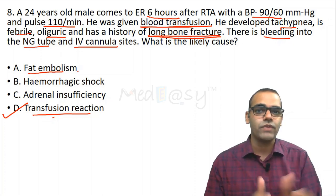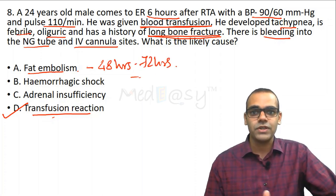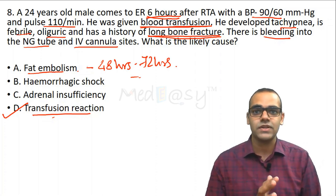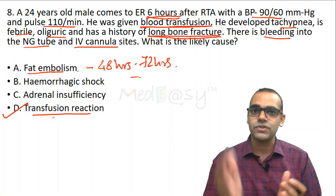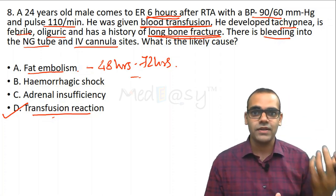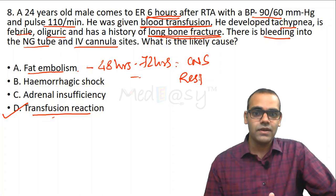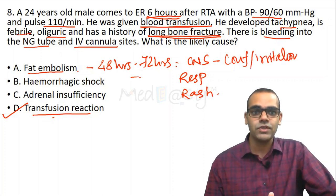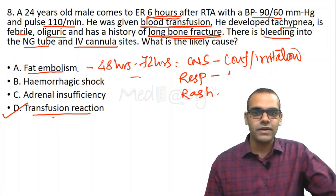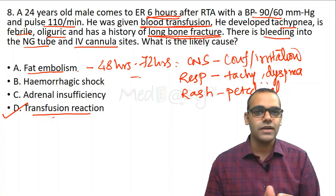Fat embolism usually occurs 48–72 hours after trauma (second or third day). In this question, the patient came just 6 hours after trauma — it is very unlikely to develop fat embolism so early. Fat embolism occurs when fat globules from a long bone fracture enter the circulation and reach the CNS, respiratory system, and skin — causing a triad of CNS confusion/irritability, respiratory distress (tachypnea/dyspnea), and a petechial rash.